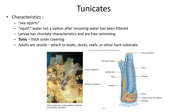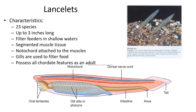Lancelets are a very primitive organism with only a few species. They are not very big and are filter feeders in shallow waters, looking somewhat like the beginnings of a fish or an eel. They have segmented muscles similar to fish and gills used to filter food. They have all the features of a chordate as an adult, whereas the sea squirt only had them as a larva.